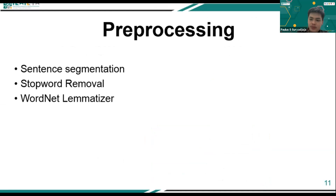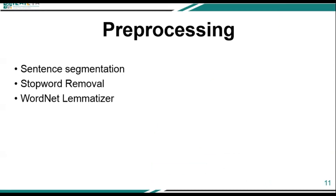The preprocessing steps carried out are sentence segmentation, stop word removal, and lemmatization. Sentence segmentation transforms a text document into a series of sentences, which is needed because SBERT accepts input in the form of a sentence array. Stop word removal is the process of removing words with low information value. Lemmatization is the process of reducing a word to its root form to group it with synonymous words.